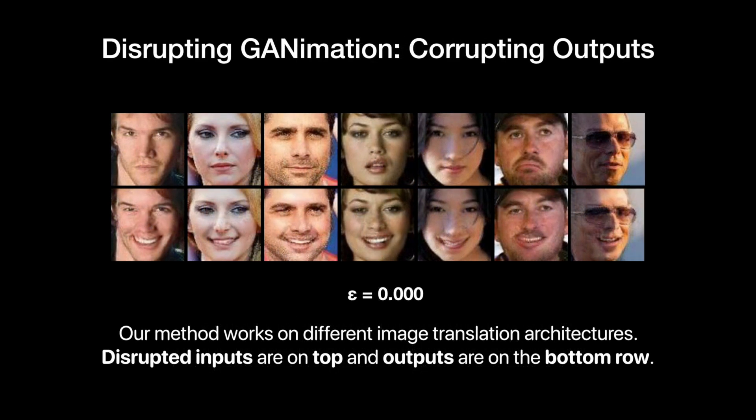Disrupting GANimation, corrupting outputs. Our method works on different image translation architectures. Disrupted inputs are on top and outputs are on the bottom row. The samples are from the Saab 8 dataset and the architecture is GANimation.